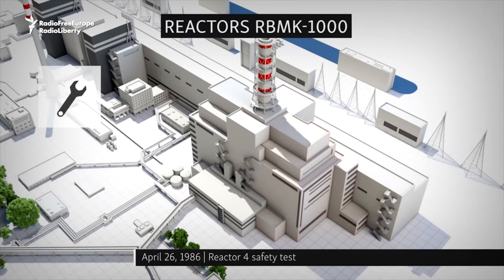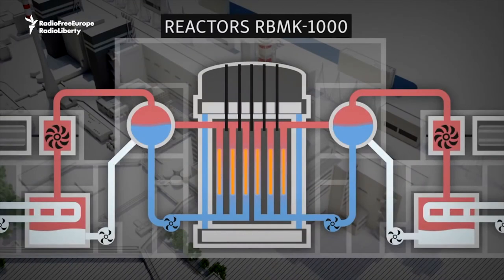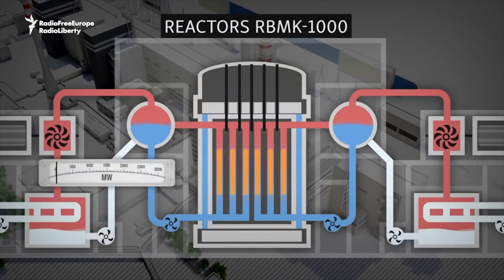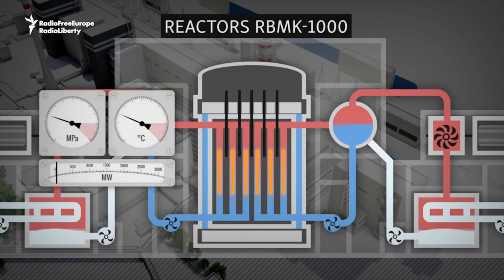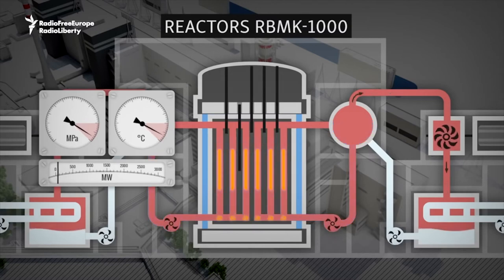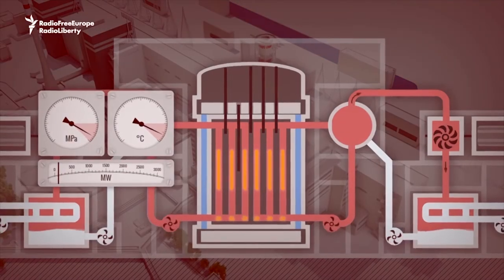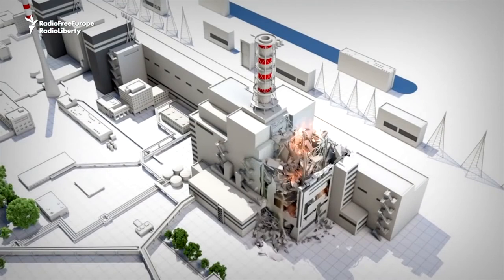Control rods are placed between the uranium to slow down the reaction, and cooling water flows around the core to prevent overheating. But as the test began, most of the control rods were removed, causing the reactor to explode.